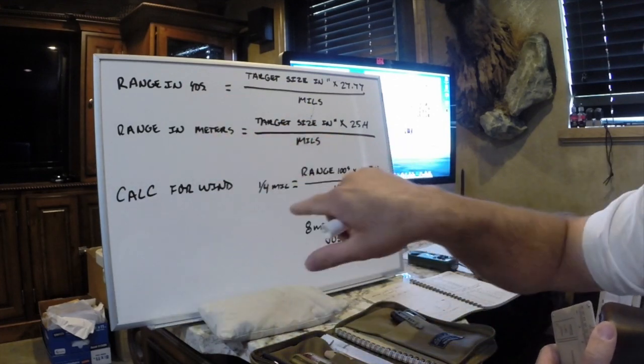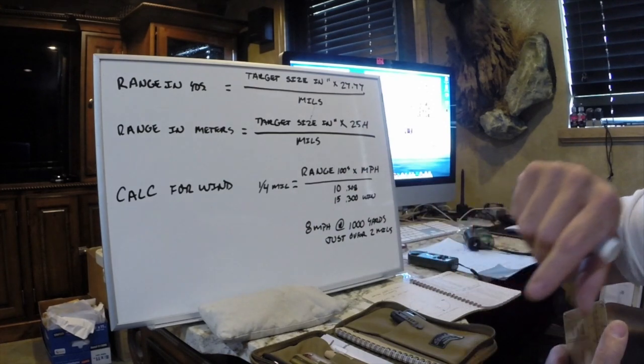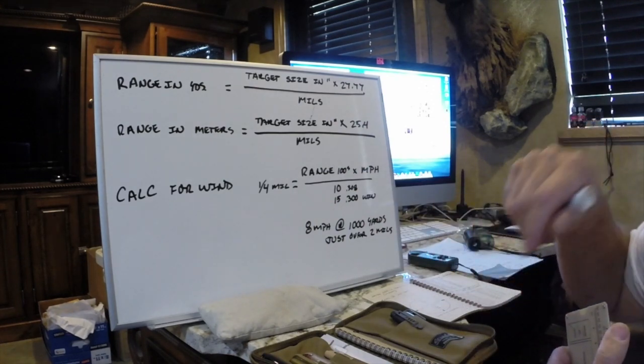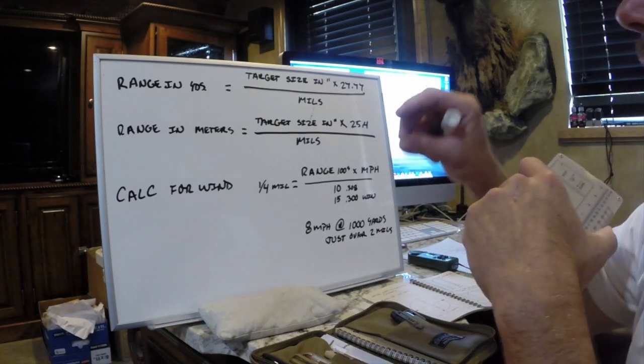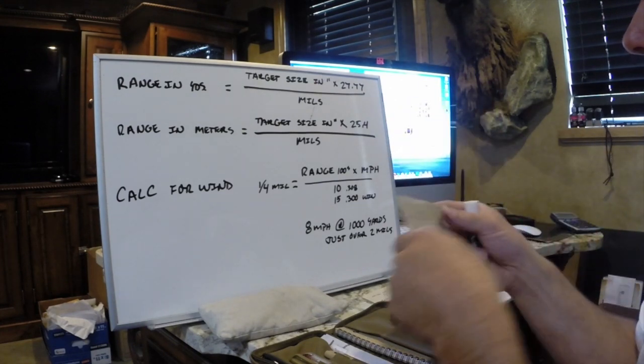You can also do this in meters. It's basically the same thing, except you times it by 25.4. So once I've found that out, then I can use my come up chart and I know where to dial the target to.